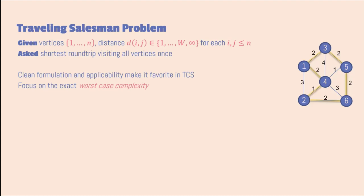So today we're going to focus on the exact worst-case complexity, so we're really going to make life hard and not make any compromise. But then of course we have to sacrifice in the running time, so we get this exponential running time. So why would you want to do this? Maybe that's something I need to dwell on for a few seconds.